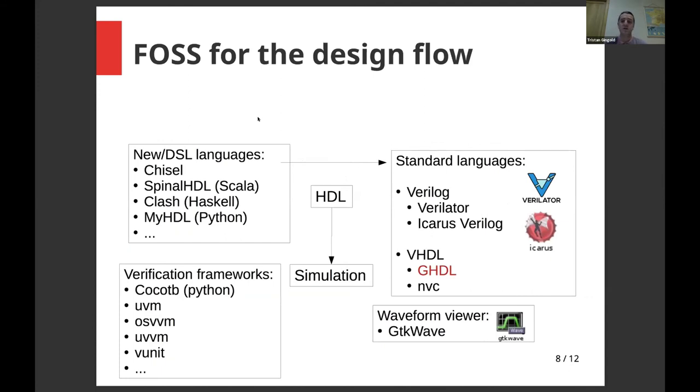So when you use free and open source software, these are the main actor in this world. So if you look at the standard language, like Verilog and VHDL, so for Verilog, you have Verilator and Icarus Verilog to handle and simulate Verilog. So Verilator is a very fast, but handles only a subset of Verilog and System Verilog, while Icarus Verilog is much slower, but it handles, I would say, it targets, holds the whole language.